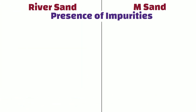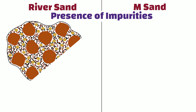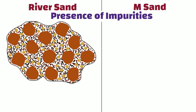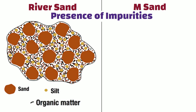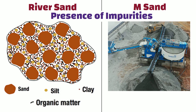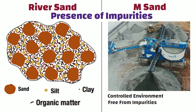Presence of Impurities: River sand may contain impurities such as organic matter, silt, and clay. On the other hand, manufactured sand is produced in a controlled environment, and is generally free from impurities.